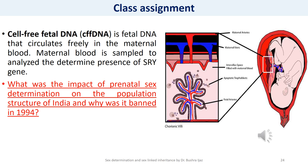Since we have completed our lecture on sex determination, here is your class assignment. Prenatal testing is the method of finding out the sex of an individual before birth. One method is called cell-free fetal DNA: fetal DNA circulates freely in maternal blood, which is sampled and analyzed for the presence of the SRY gene — the sex-determining region on the Y chromosome. If SRY is present, the baby is male; if absent, the baby is female. Your assignment question: What was the impact of prenatal sex determination on the population structure of India, and why was it banned in 1994?